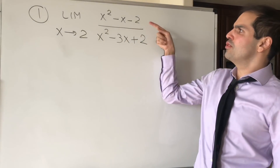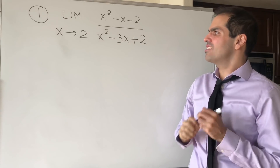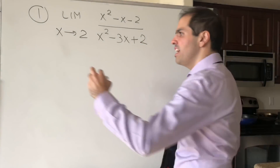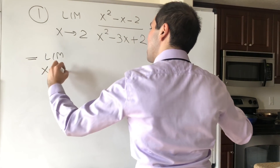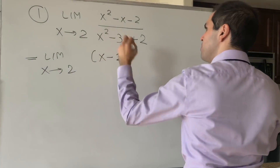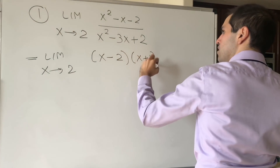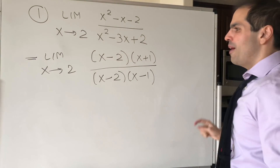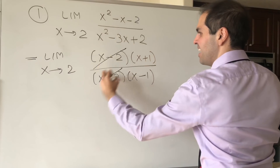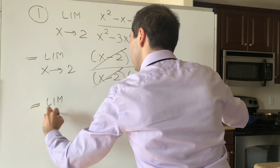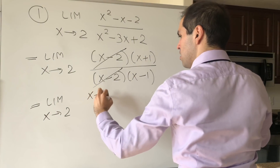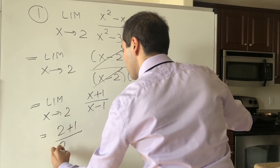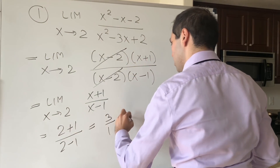First question: limit as x goes to 2 of (x² − x − 2) over (x² − 3x + 2). This is very classical — just factor out the numerator and denominator. That becomes limit x→2 of (x − 2)(x + 1) over (x − 2)(x − 1). The (x − 2) cancels, leaving limit x→2 of (x + 1)/(x − 1). Plugging in: (2 + 1)/(2 − 1) = 3/1 = 3.